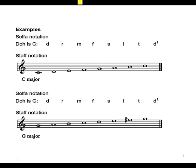These are the examples where, as I said, Do is C, that means we are in C major. This will be how the staff notation will look like, and this will be how the Sol-fa notation will look like. So if Do is G, that means it's G major. That's how it will look like on the staff and also how it will look like as a Sol-fa notation.